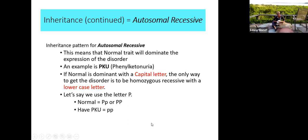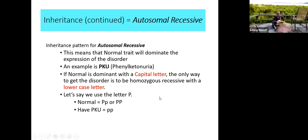With autosomal recessive inheritance — using PKU, phenylketonuria, as an example — the normal trait dominates over the disorder. Normal is indicated with a capital letter P and the disorder with a lowercase p. The only way to get the disorder is if the offspring inherits two lowercase letters — homozygous recessive. Wherever the capital P appears, that offspring will be normal; to have PKU the only expression is homozygous recessive: two lowercase p's.